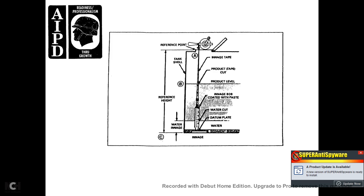Here we are checking the water gauge. The paste is applied to the bob. The diagram shows: reference point A at the top, B as the product level, and C as the bottom of the tank. From A to B you have the ingage tape and product tape cut at the product level. From B to C you have the water and sediment layer — the water ingage. The datum plate is at the bottom. The ingage bob is coated with paste showing the water cut, up to the product level. If the water is deeper than the bob, coat the tape as well.